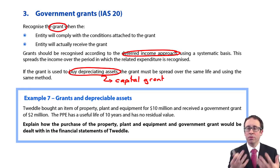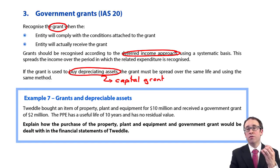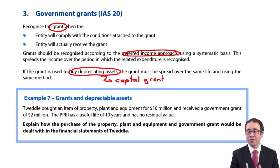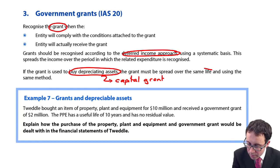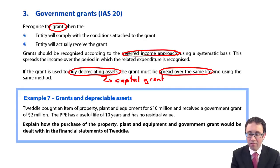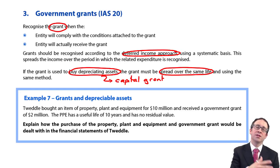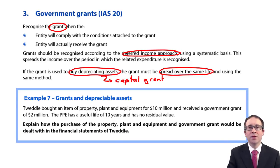If the grant was for the creation of a number of jobs, you would recognise it immediately once you've met that number of jobs being created. But if it's a capital grant, you need to release that deferred income over the life of the asset using the same depreciation method. So if it was straight-line, you would release it straight-line over the same number of years. If it's reducing balance, then use reducing balance.